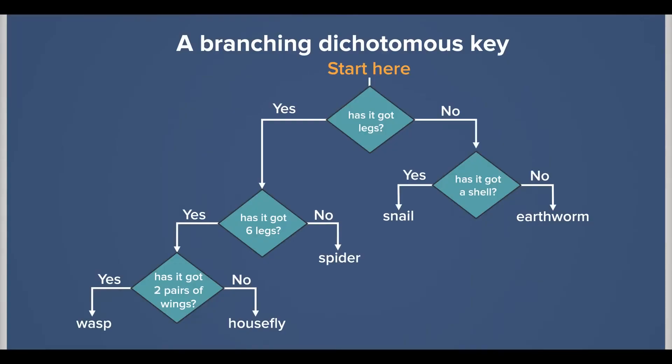But how? Well, just like a flowchart, a dichotomous key consists of a series of questions. Each question has two alternative answers. Depending on which answer is chosen, the user is directed to the next question.